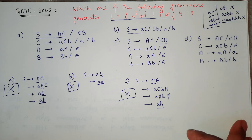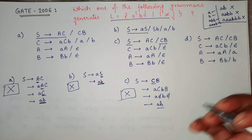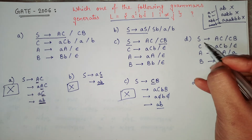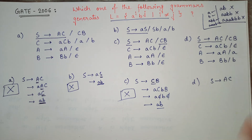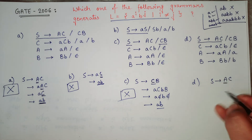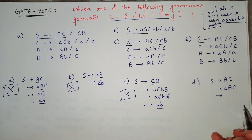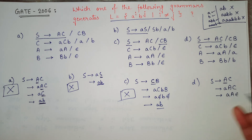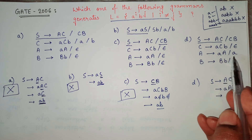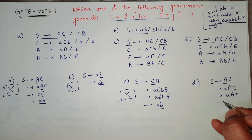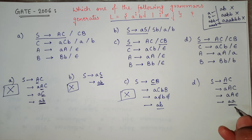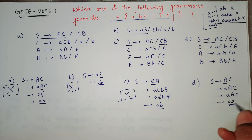Since A, B, and C are all eliminated, let's verify option D. Taking S → AC, replacing A with aA gives 'aaC'. Replacing C with null and A with small 'a' gives us two a's and zero b's — that is a different number of a's and b's, which is exactly what we want. So this can be my answer.